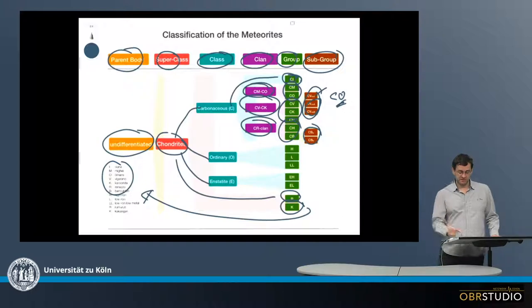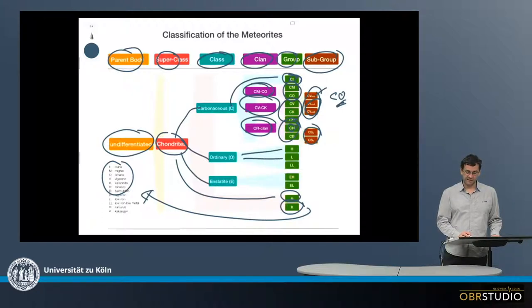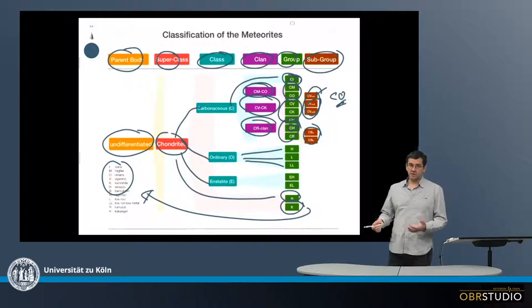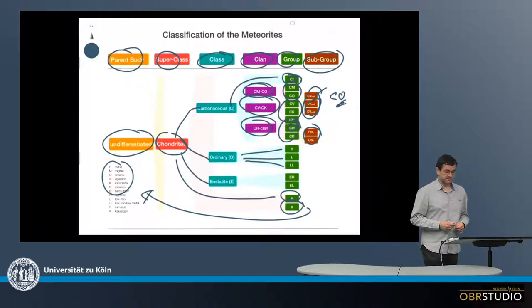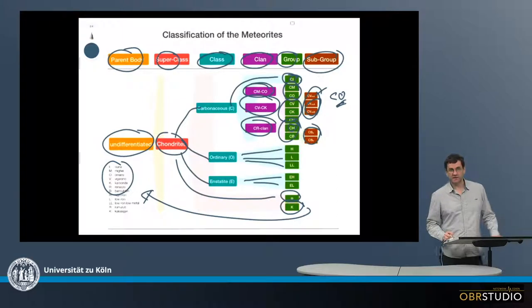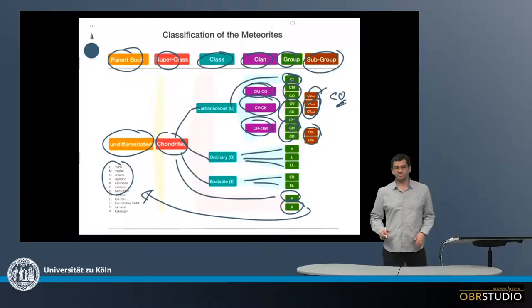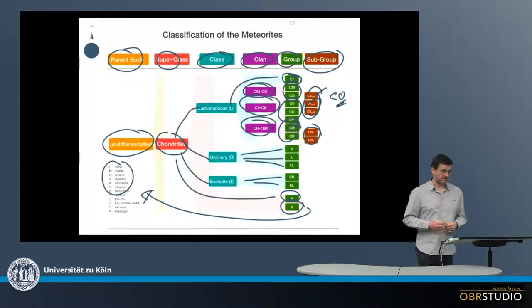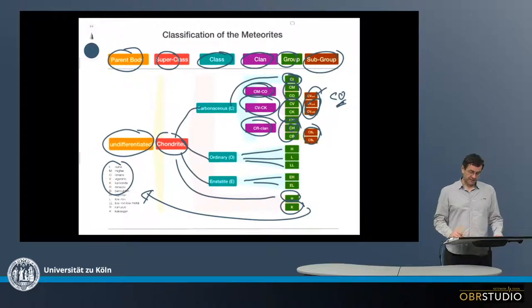The one exception here is the CH chondrites, in which case H stands for high iron. This is similar to the ordinary chondrites, which have H for high iron, L for low iron, and LL, which stands for low iron, low metal. The same subclassification is present in enstatite chondrites, high iron and low iron. As the name says, one has high iron, the other has low iron. So this is the main difference here.